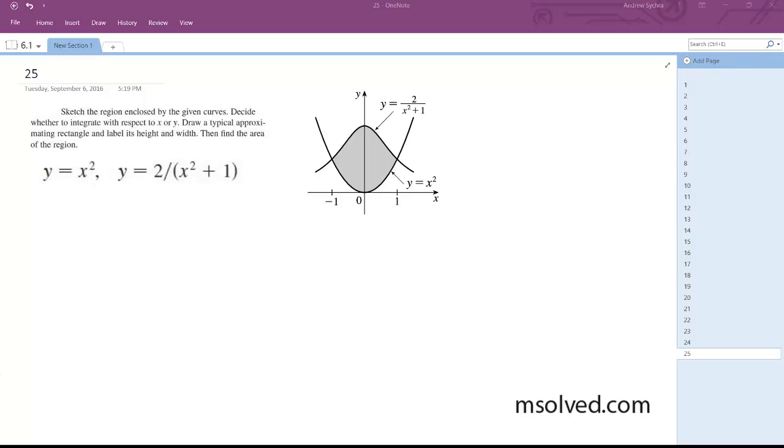So we're going to solve this problem and find the intersection points so we can find the enclosed area. After solving this, we find negative 1 and 1 are the intersection points.